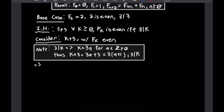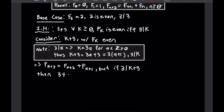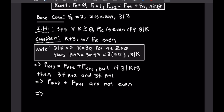Now let's look at the definition of F(K+3). We have F(K+3) = F(K+2) + F(K+1). But if 3 divides K+3, then 3 does not divide K+2 and 3 does not divide K+1. That means F(K+2) and F(K+1) are not even — they're odd. So F(K+3) is the sum of two odd numbers, and since the sum of two odd numbers is always even, F(K+3) is even.